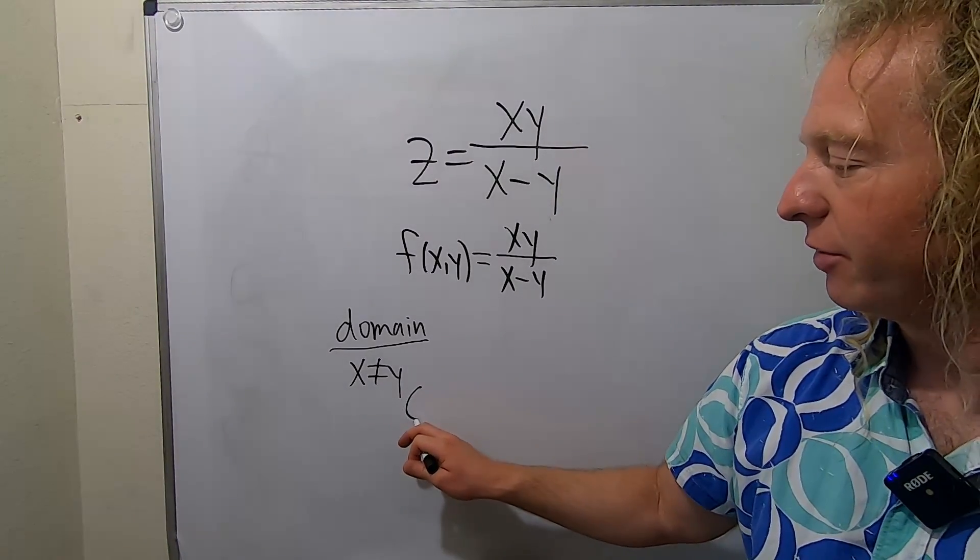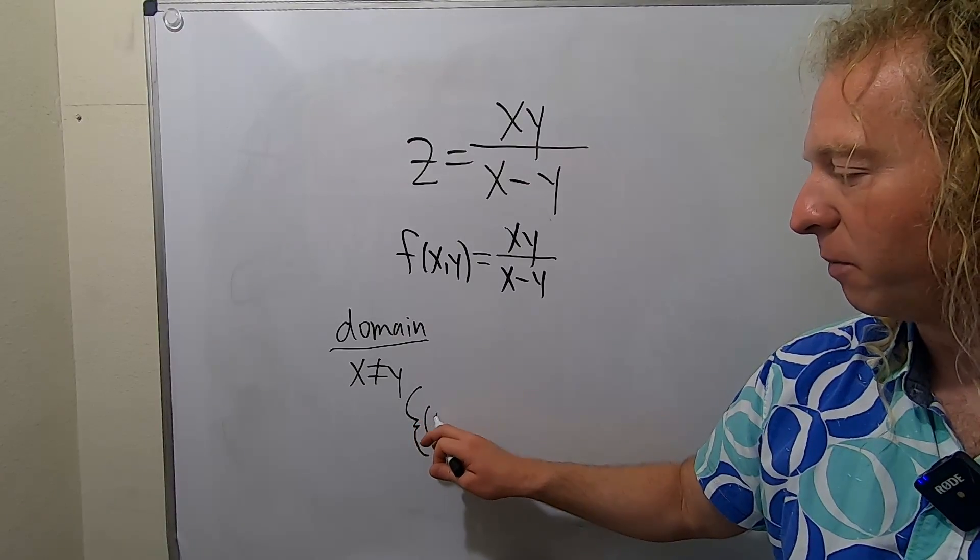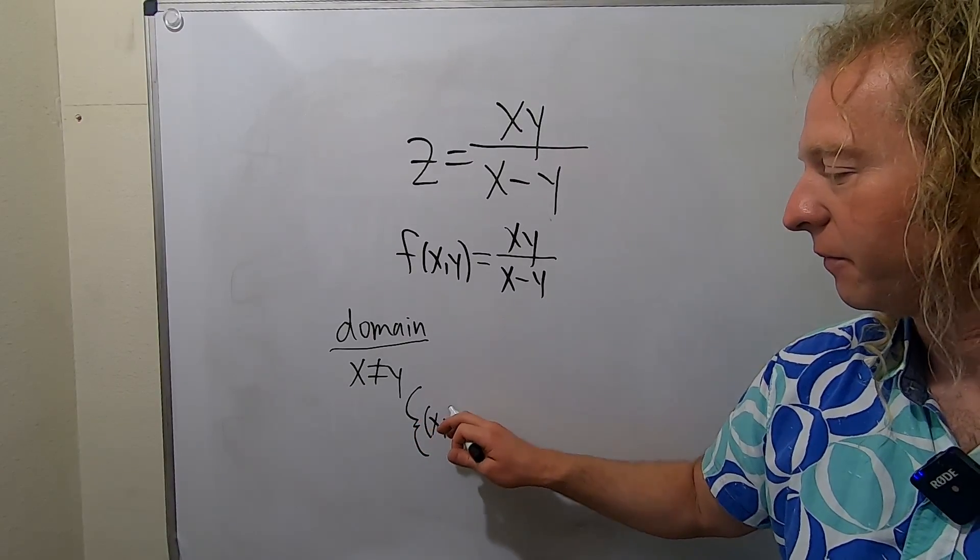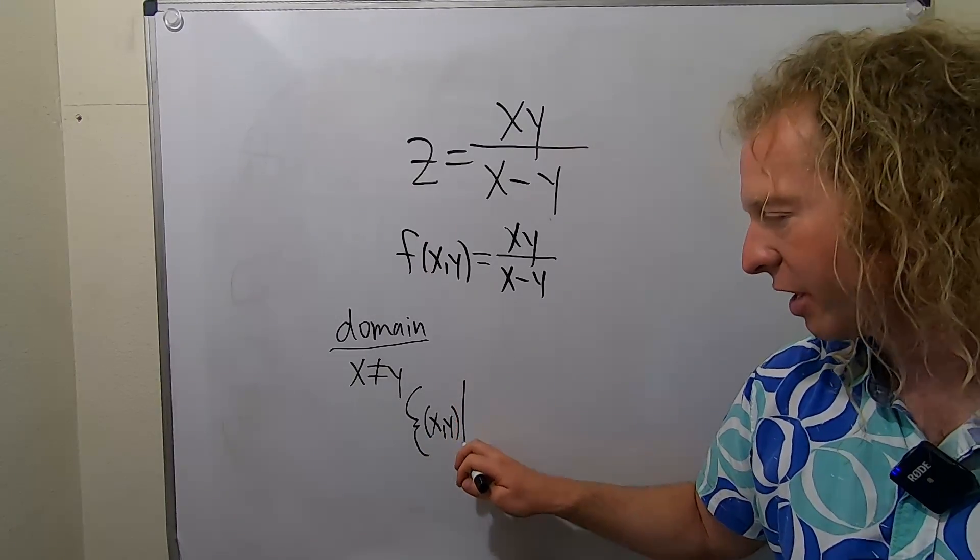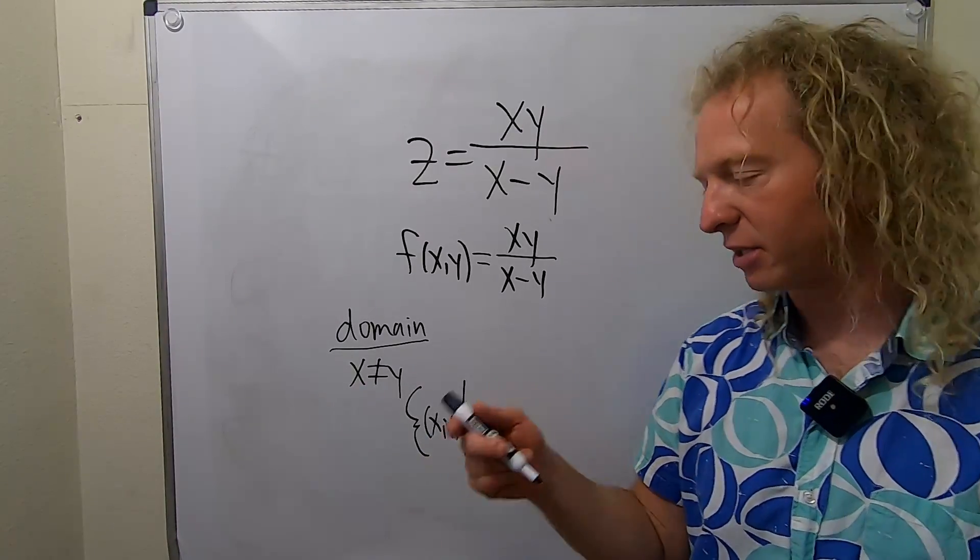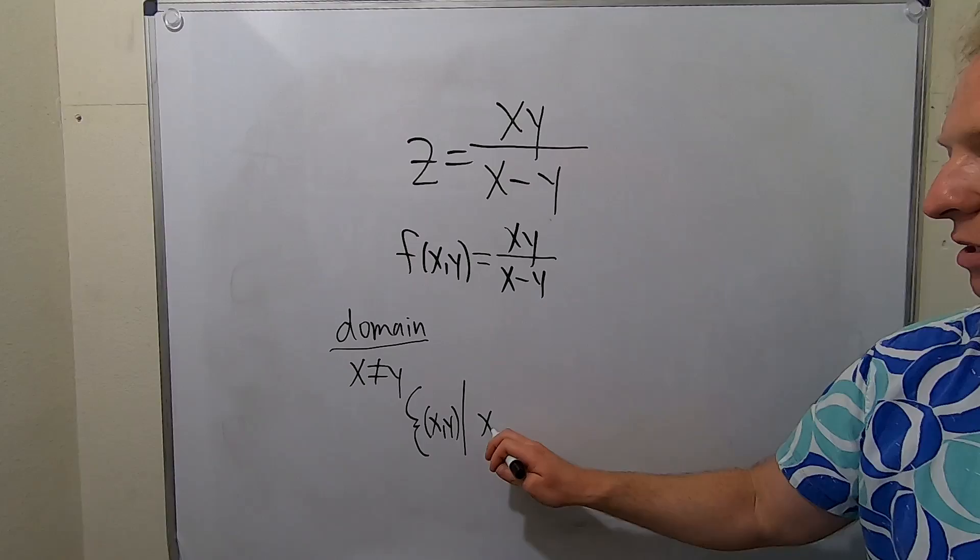So let's go ahead and write the answer down. It's a set of ordered pairs (x, y). So the set of all ordered pairs (x, y) such that—that's how you read the line—x is not equal to y.